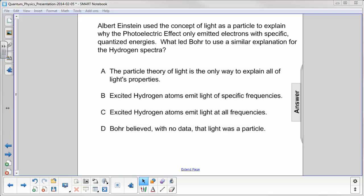Albert Einstein used the concept of light as a particle to explain why the photoelectric effect only emitted electrons with specific, quantized energies. What led Bohr to use a similar explanation for the hydrogen spectra?